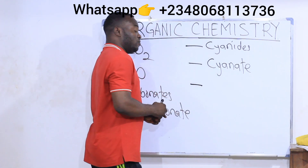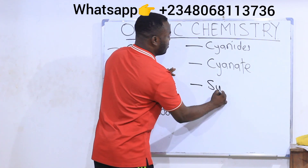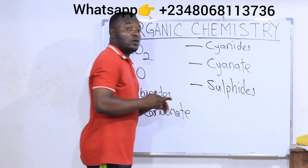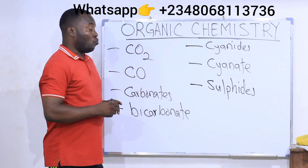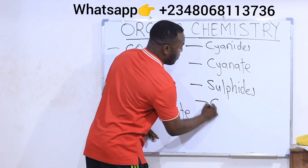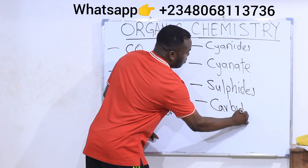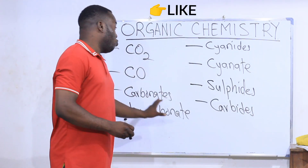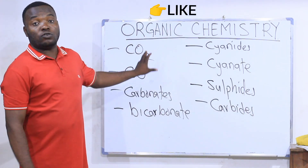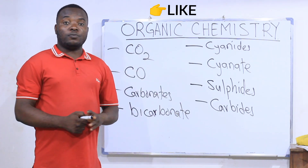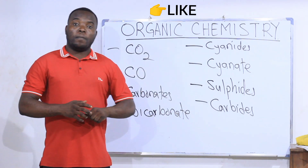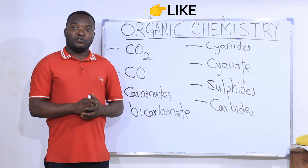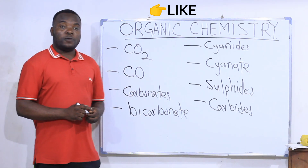The second to last compounds we don't include are the sulfites — we don't include sulfites. We don't include carbides. So these are the compounds of carbon which are not included in the study of organic chemistry, whereas the majority of other compounds of carbon are included.